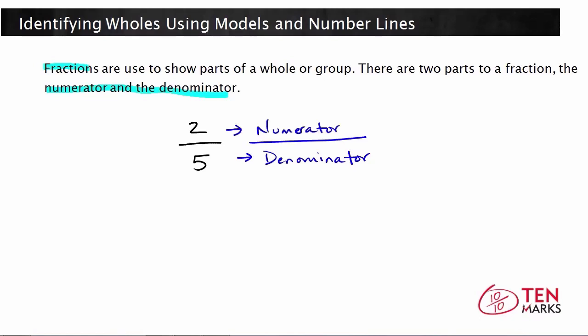The denominator of a fraction tells you how many equal parts the whole is divided into. So with this fraction, the whole was divided into five equal parts. The numerator tells you how many of those equal parts you're looking at or how many you're using. So that means with this fraction, we're using two of the five equal parts.